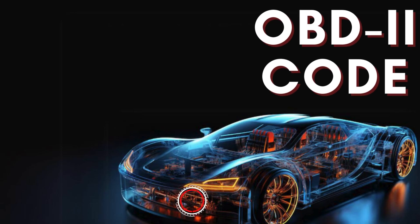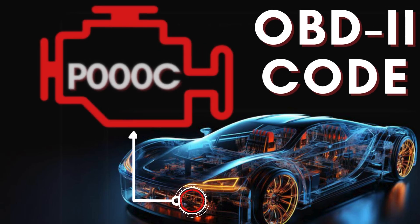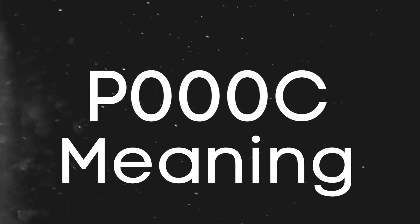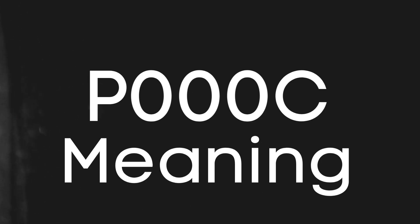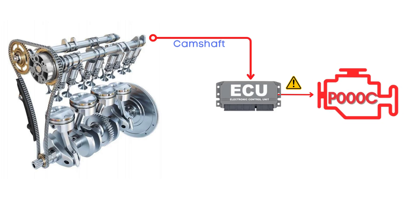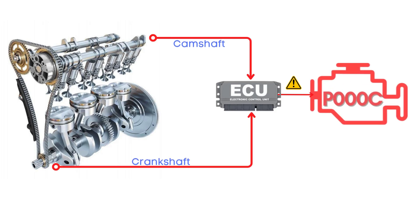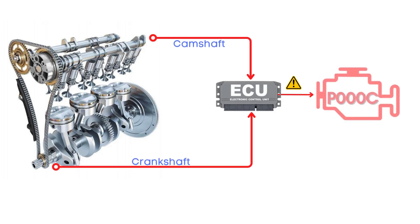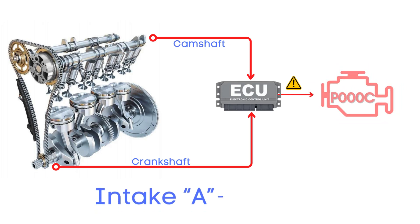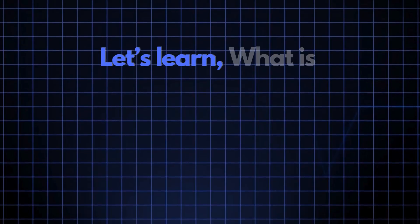In today's video, we're diving into everything you need to know about OBD-II Trouble Code P000C. First things first, let's break down what the P000C code actually is. This code gets triggered when the engine control module detects that the camshaft isn't properly aligned with the crankshaft. Specifically, the P000C code points to an issue with the intake camshaft sensor on bank 2.